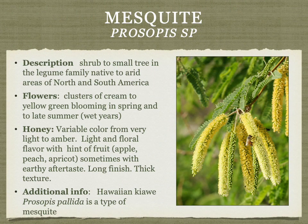Mesquite is a number of species in both North and South America, produced in Texas and the Southwest. Because there are multiple species, the honey can be variable from light to amber with hints of fruit, an earthy aftertaste, a long finish, and thick texture. It's not smoky like mesquite wood used for barbecue — not quite like that at all. Hawaiian kaiawe is actually a type of mesquite introduced from South America that has now become invasive in Hawaii.